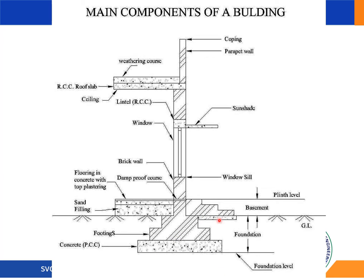The portion above ground level is called the plinth level. It is the offset created between the ground and the superstructure, constructed by building a brick wall from ground level up to plinth level. The main function of the plinth is to prevent the entry of moisture from the ground surface into the building structure. The plinth height must be a minimum of 45 centimeters, that is three feet, from the ground level.